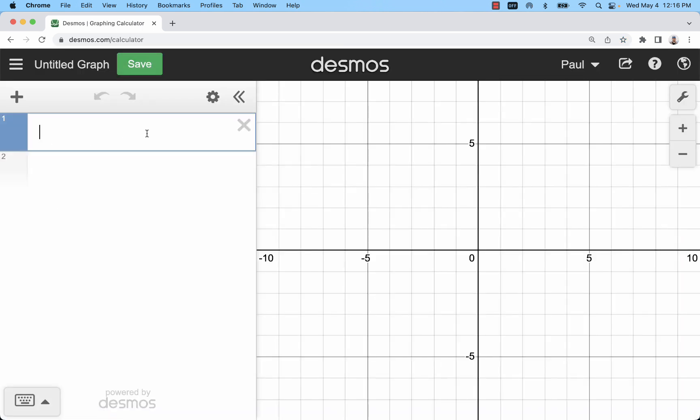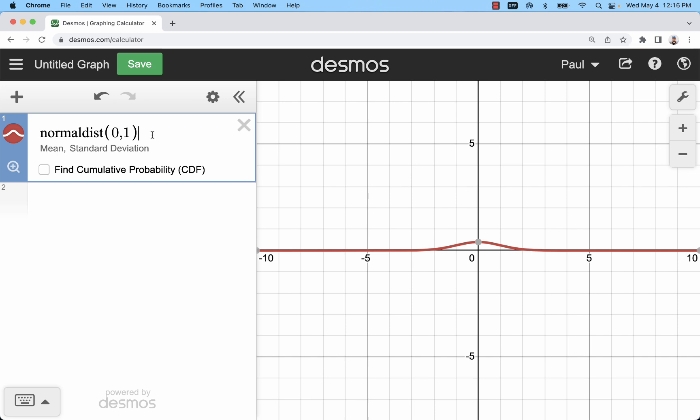So the most simple way that we can do this is just typing normaldist and then a mean and standard deviation. So if I wanted to do the standard normal distribution I would do 0 and 1.